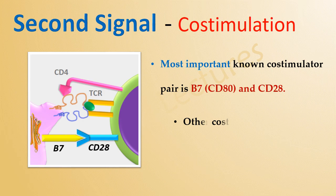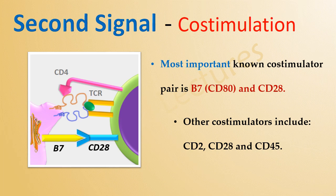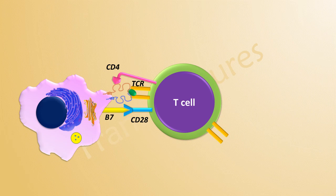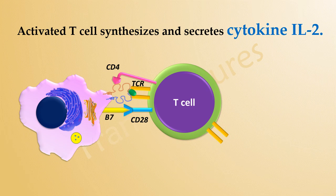Other co-stimulators include CD2 and CD45. These two signals result in the activation of the T-cell. As a result, the activated T-cell synthesizes and secretes interleukin-2.